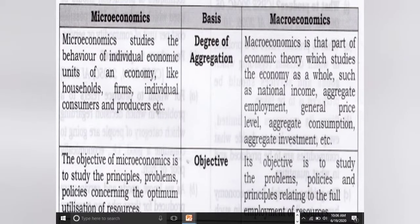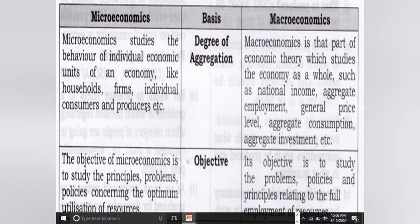Difference based on degree of aggregation: Microeconomics studies the behavior of individual economic units — like household, firm, individual consumer and producer। जो व्यष्टि अर्थशास्त्र है उसके अंदर individual economic units जैसे household, firm, individual consumer या single producer की study होती है। Micro में aggregation होता है लेकिन वो कम degree का होता है।